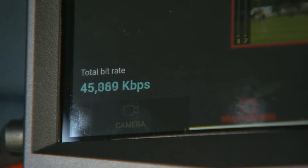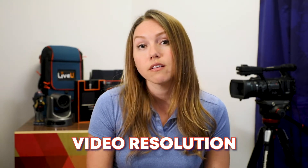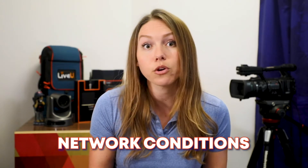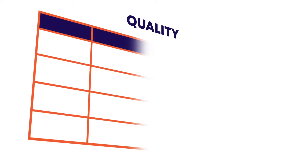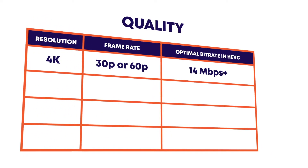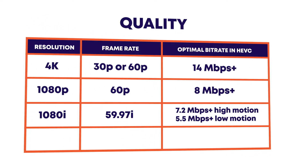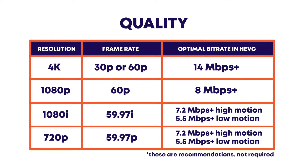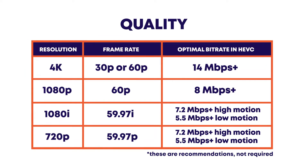It's obvious that you want to transmit the highest quality video you possibly can, but there are a few considerations to achieve this goal. Streaming bitrate is probably the most important, and what is best for your production really depends on three things when using LiveView: low motion or high motion, video resolution, and the given network conditions. To help, we've built a chart to suggest the optimal streaming bitrate for any profile your event falls into. These minor tweaks will optimize your production quality and fine-tune how best to utilize the LiveView system.